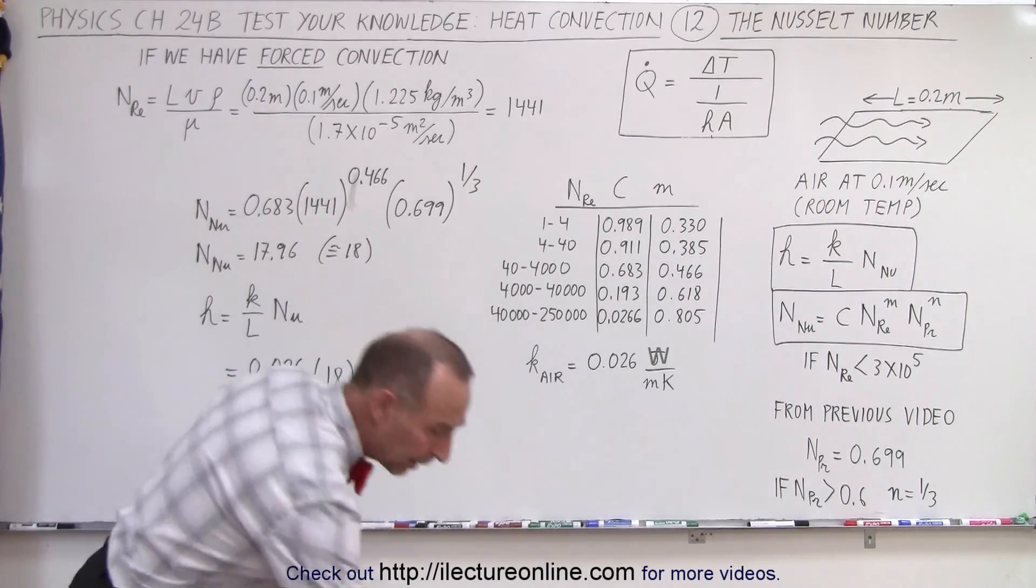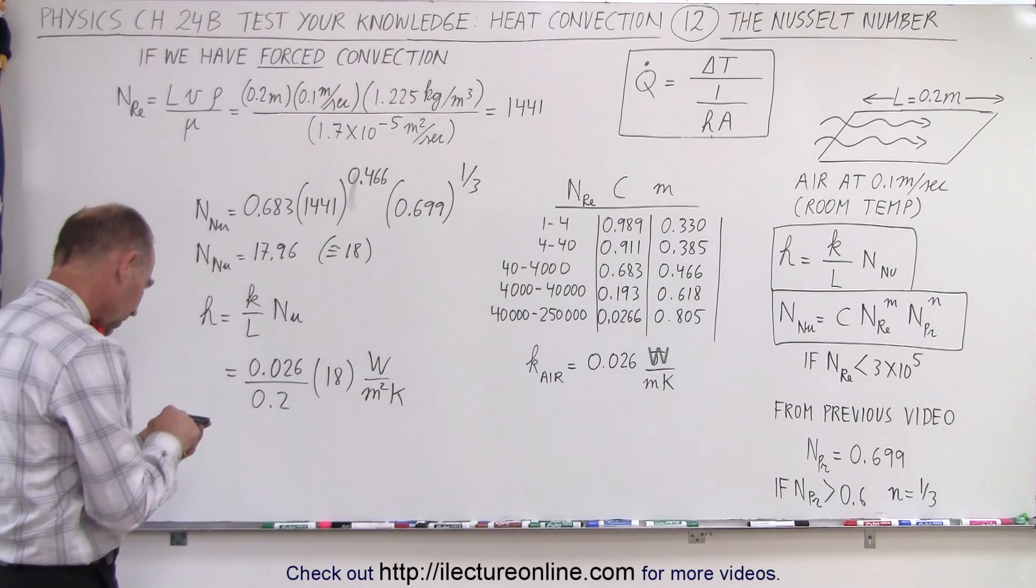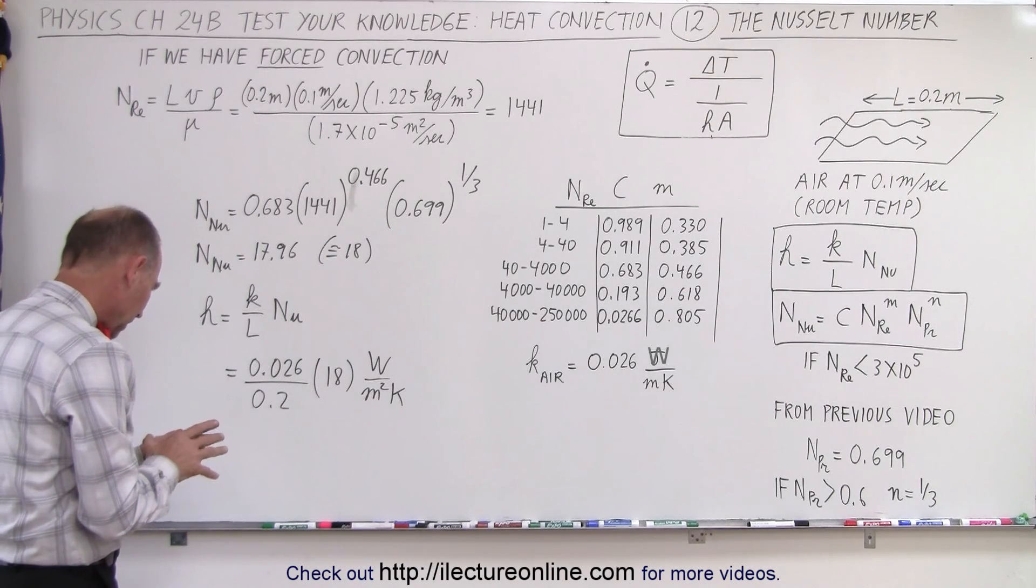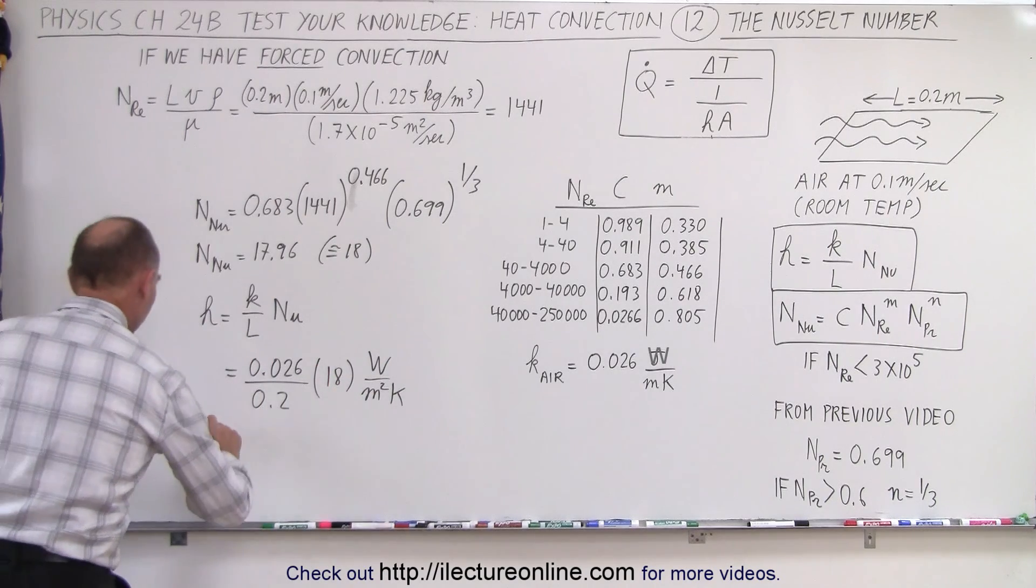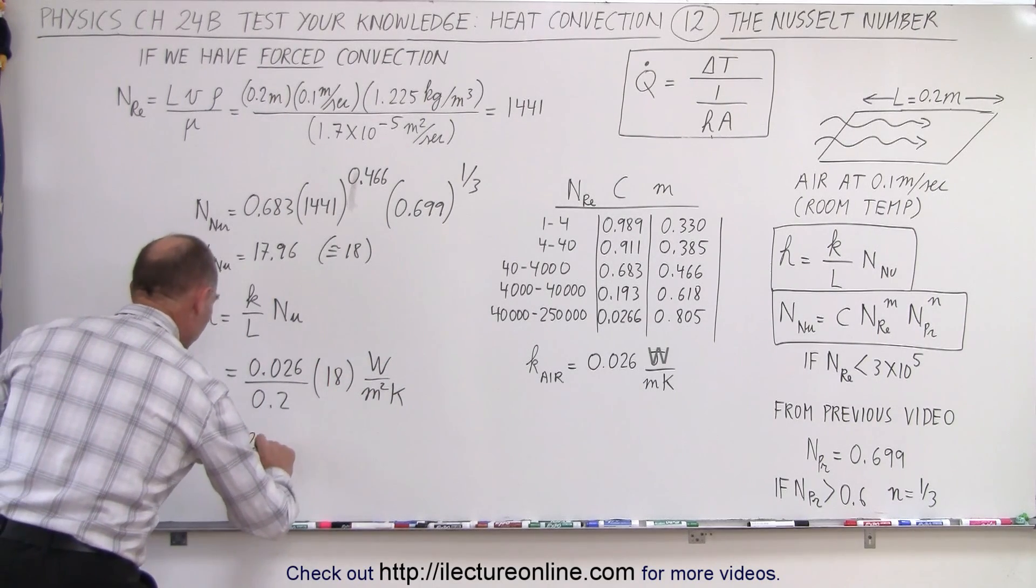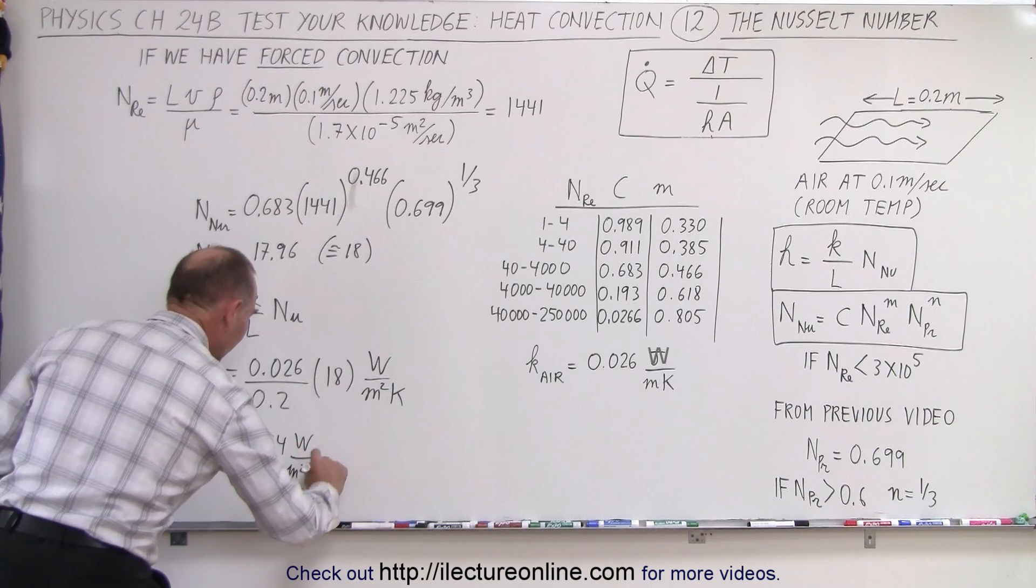Alright, and let's multiply it times 0.026 divided by 0.2, and we get 2.34. So H equals 2.34 watts per square meter times Kelvin.